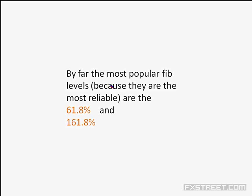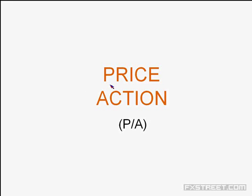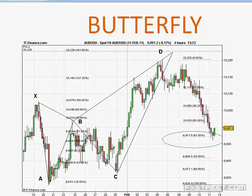Bat and butterfly formations are also found in ABCD and three drives formations. By far the most popular Fib levels, because they are the most reliable, are 61.8 and 161.8. The retracement levels are good for 61.8%, and the extension levels are good for 161.8. The reason I'm not fanatical about 261.8 is that Elliott Wave and other formations — bats and butterflies — won't always extend to 261.8, because that's the end of your drive. A lot of fifth waves are short.